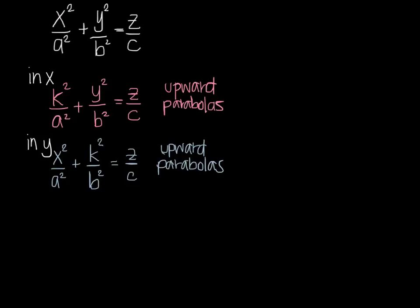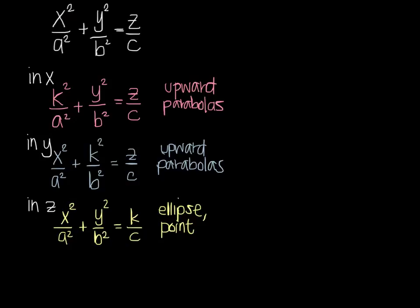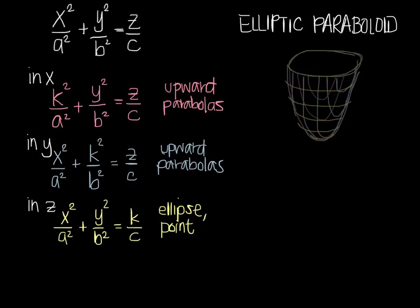The traces in Z are ellipses whose radius depends on K. If K is zero, X and Y are both zero — a point. If K is positive, we have ellipses. If K is negative, there are no traces at all, so we're dealing with only positive values of Z. The traces that appear twice — the parabolas — provide the noun: paraboloid. The trace that appears once — the ellipse — provides the adjective. The answer is an elliptic paraboloid, with upward facing parabolas in X and Y traces, and ellipses in Z shown in yellow.